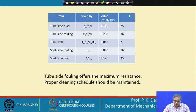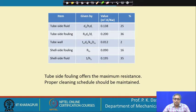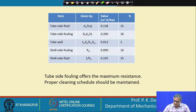Tube side fouling offers the maximum resistance. There are different schemes of cleaning: one scheme is chemical cleaning, and another widely used scheme is circulating metallic balls of suitable size through the tubes. Due to this circulation, the metallic balls help in dislodging the fouling layer, which then has to be cleaned out.